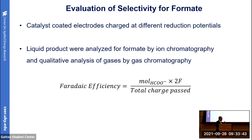For evaluation of catalytic performance, a negative potential was applied to the working electrode and liquid samples were collected after a certain time. The performance was compared using Faradaic efficiency — simply the percentage of charge that is actually used to convert carbon dioxide to formic acid. Higher Faradaic efficiency means better performance.